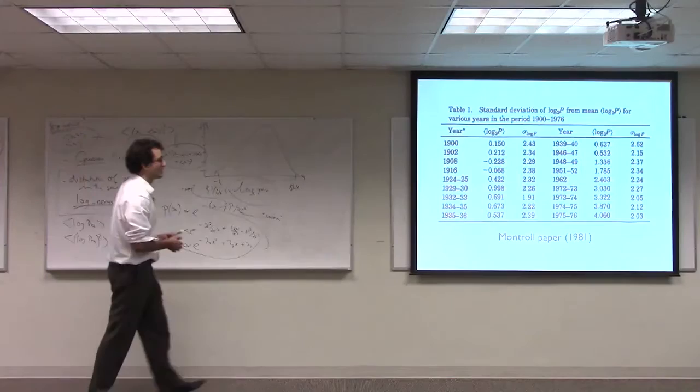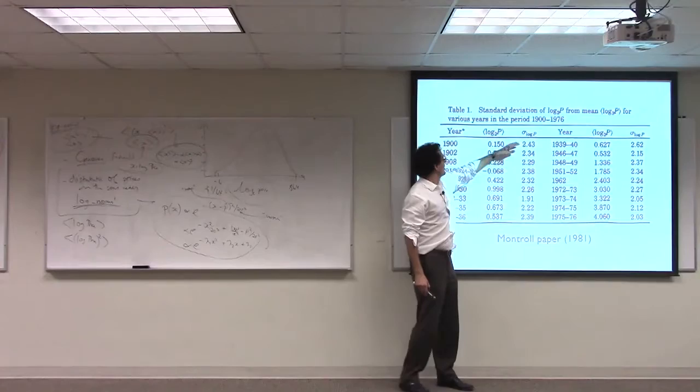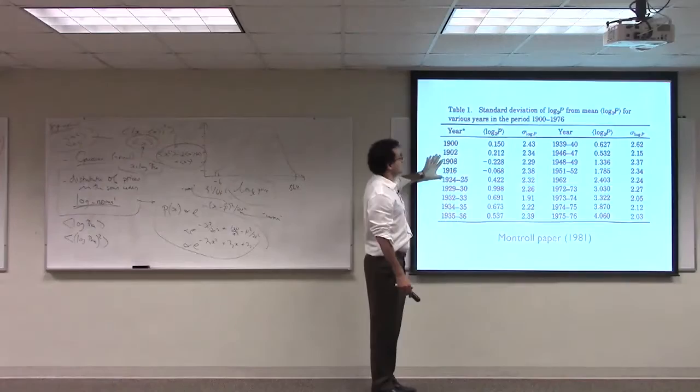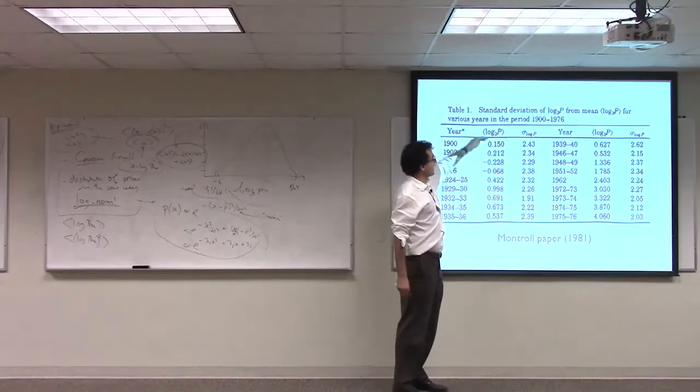But what he draws your attention to is this column here. This is the variance of the log price over time. And what you can see in the variance of the log price is that over 75 years of the Sears Roebuck catalog, and it's important to say, both world wars, enormous social change. So here they're selling buggy whips and here they're selling cassette tapes.